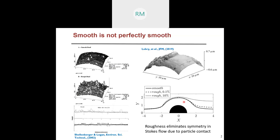This roughness leads to asymmetry in the trajectories of two particles. Since roughness is influencing the pair interactions, it would have some non-intuitive effects on the bulk properties of the suspension. We might think that increasing roughness would increase the width of the lubrication film between the particles, which would lead to a reduction in hydrodynamic stresses and, as a consequence, viscosity should decrease.